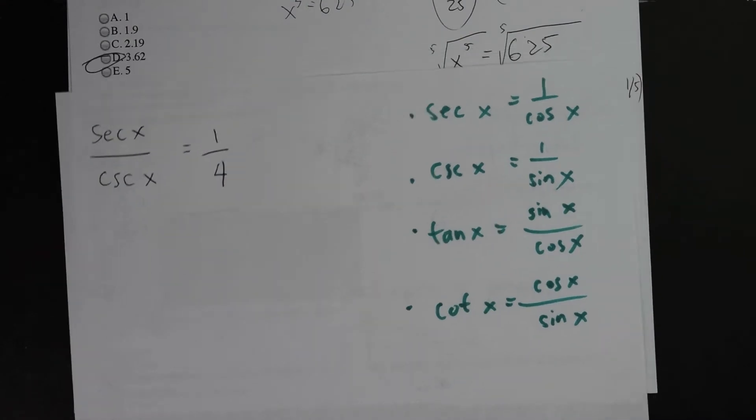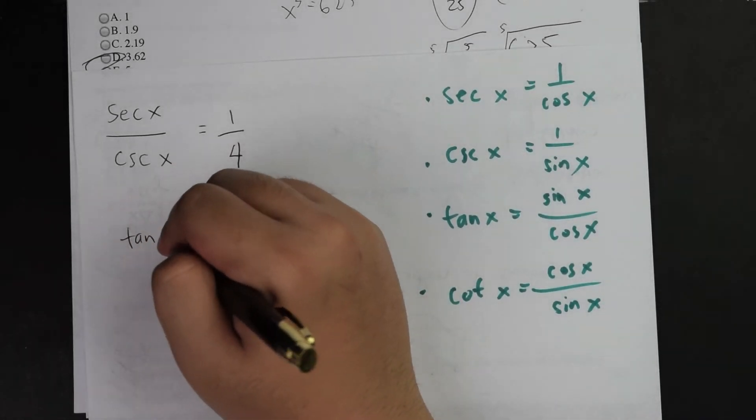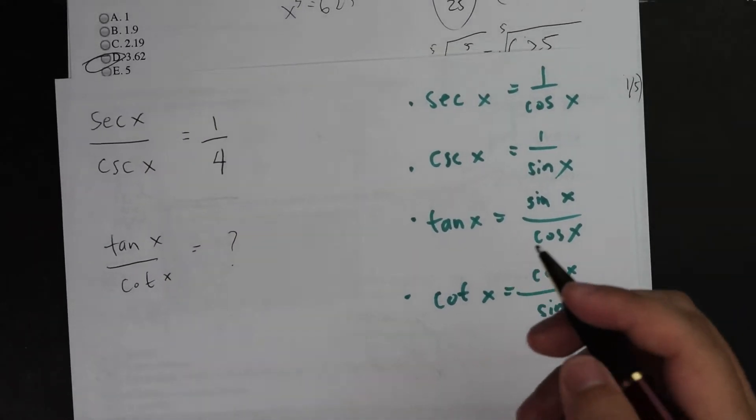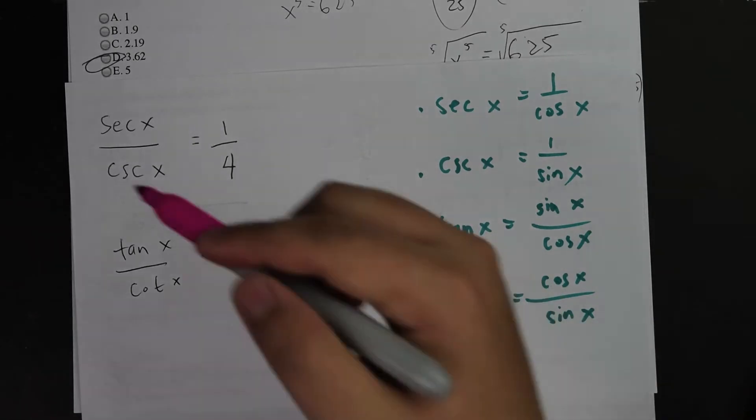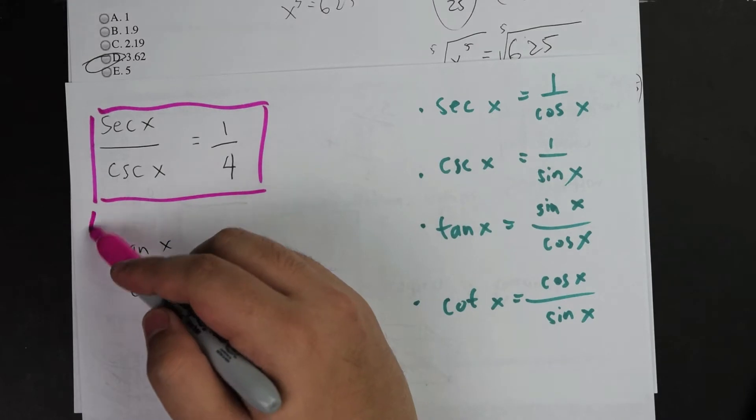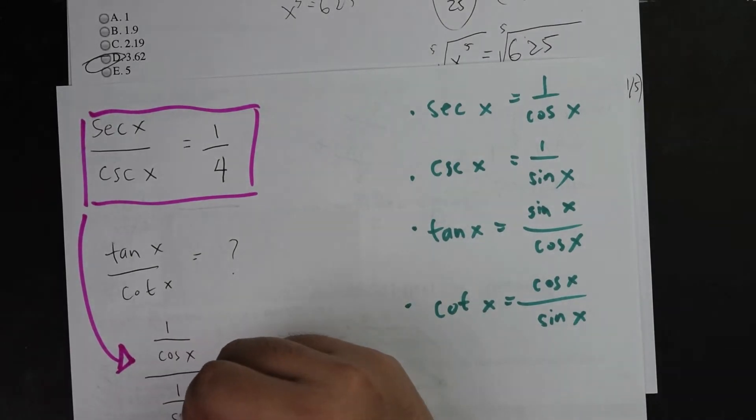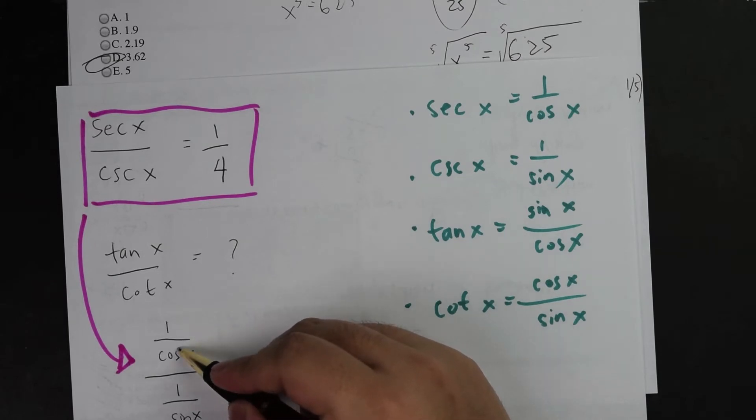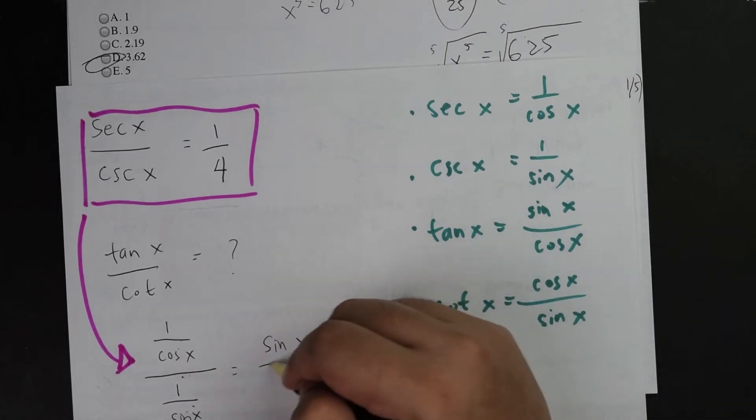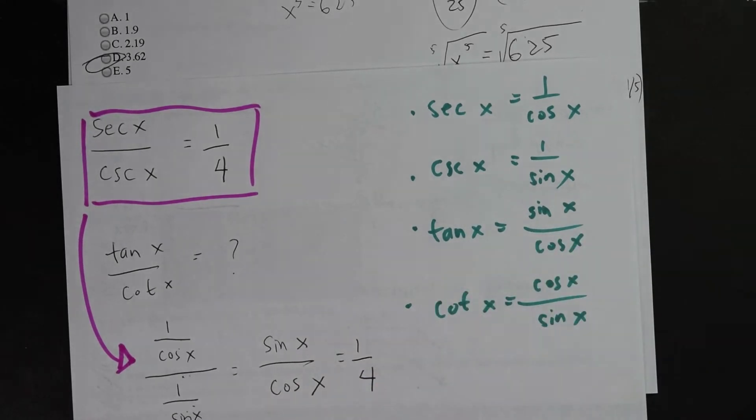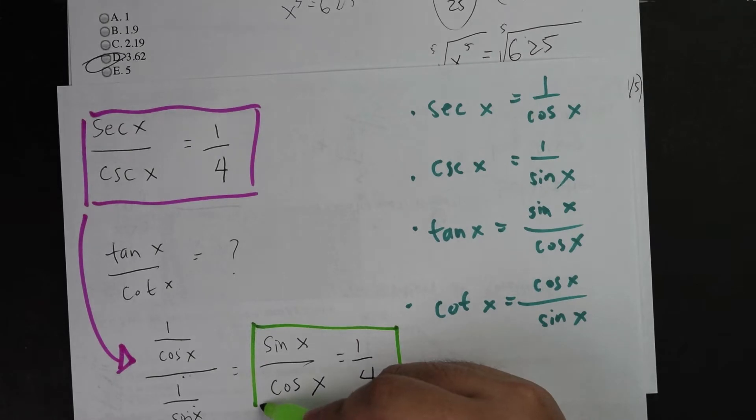They ask you secant over cosecant and also what's the ratio for tangent x over cotangent x. What I first did was simplify this to an easier terminology. I could change secant x over cosecant x into 1 over cosine x over 1 over sine x. This becomes 1 over cosine x times sine x because of the reciprocal rule. So I did sine x over cosine x, which equals 1 fourth. This statement I will need soon enough.